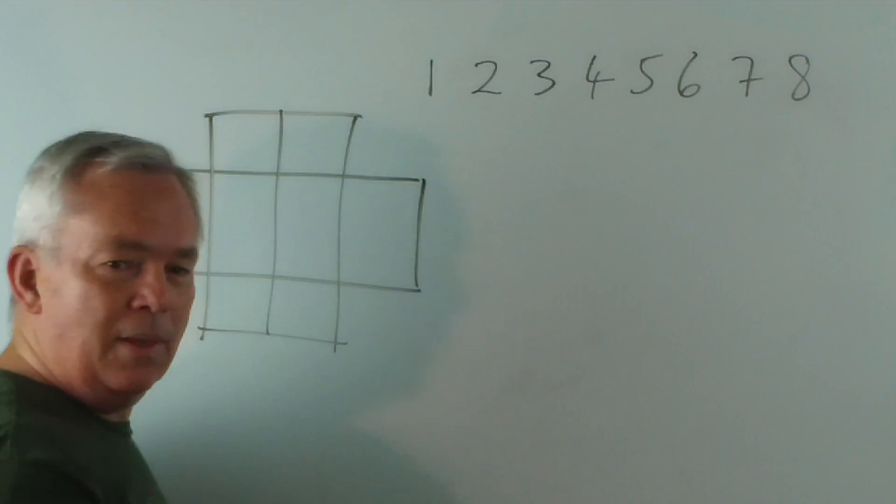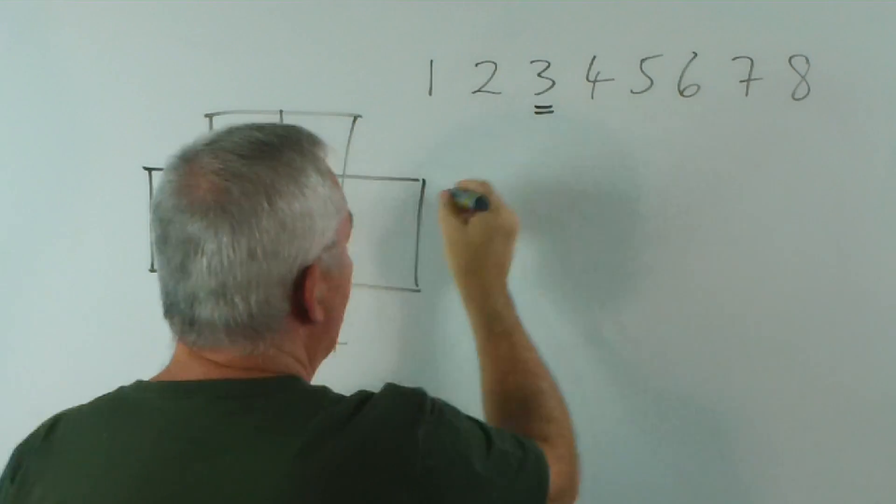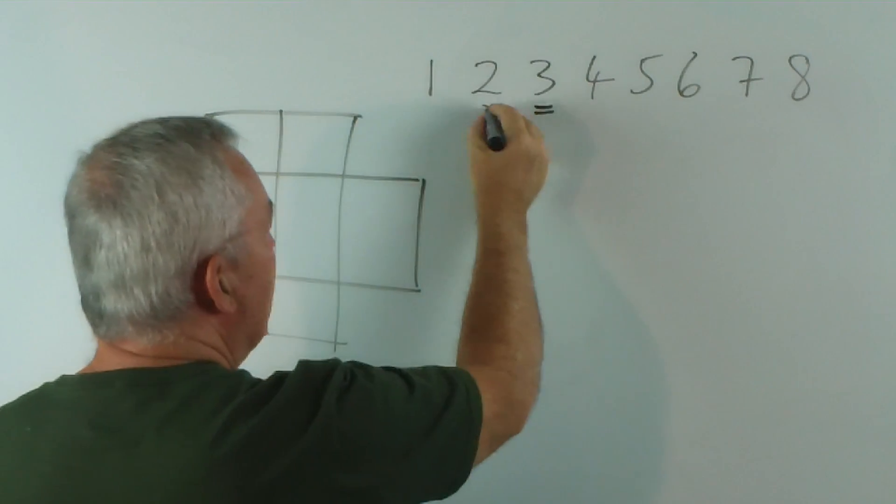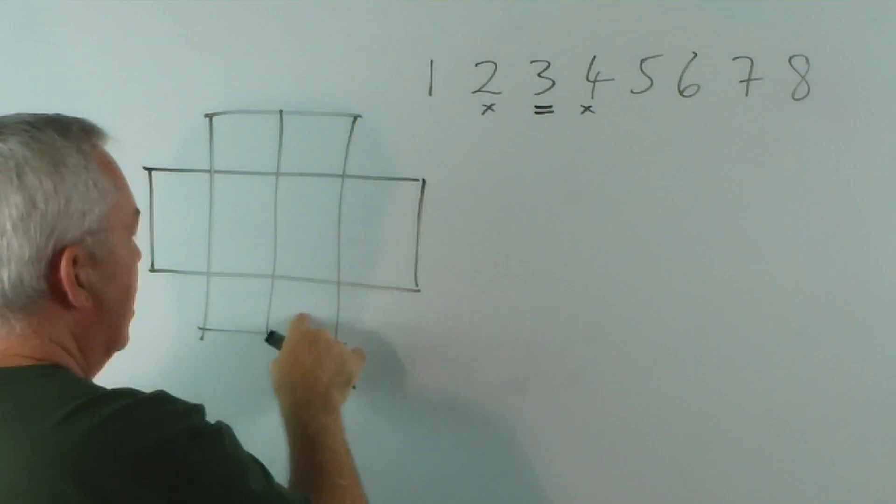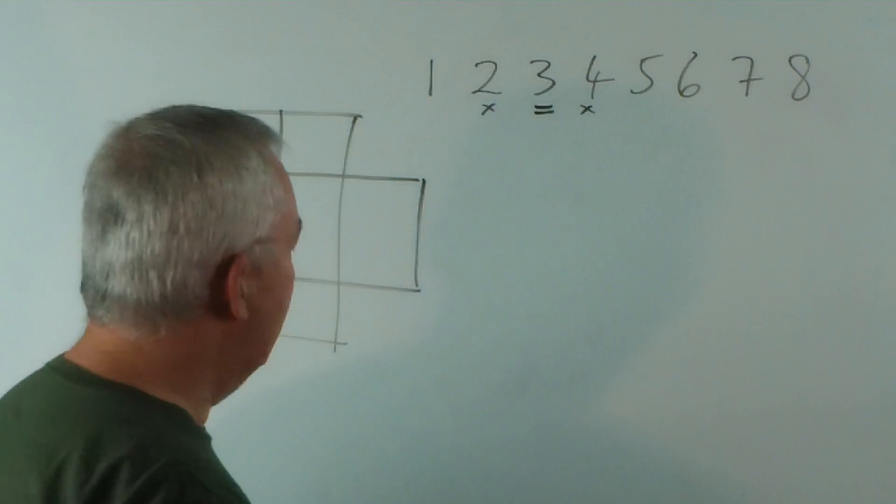And what I mean by adjacent number is that if I, for example, put the number three here, I wouldn't be allowed to put a two or a four in those positions because they're adjacent numbers or consecutive numbers.